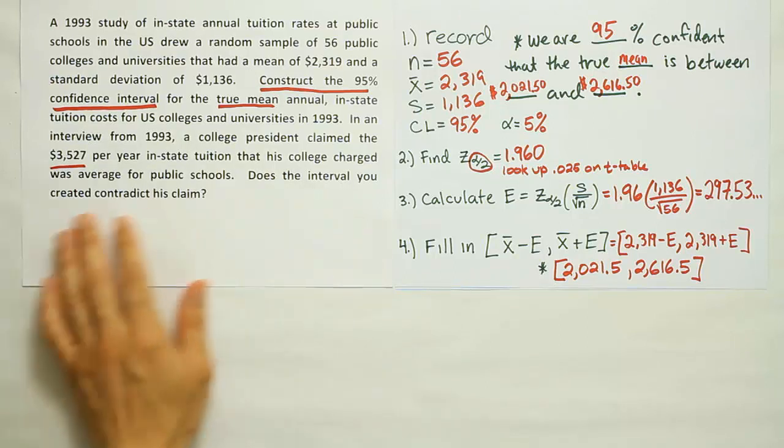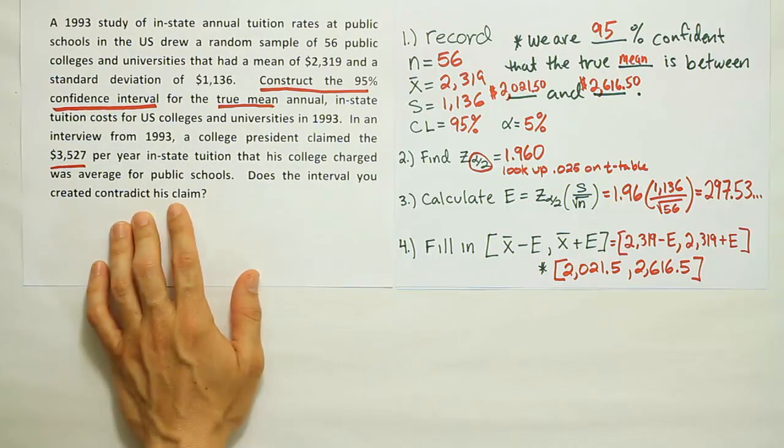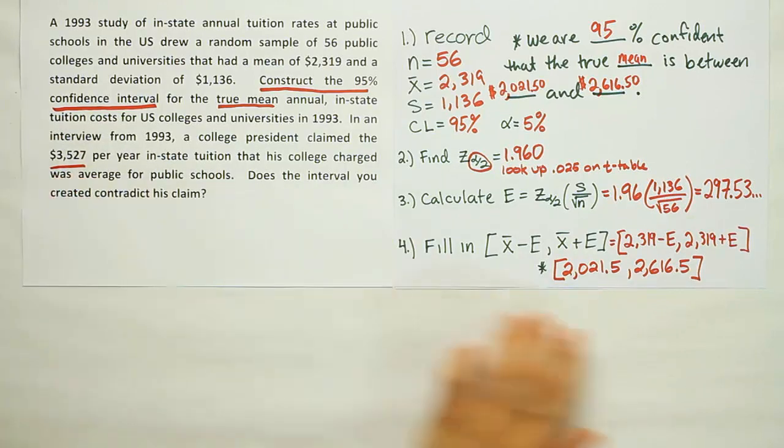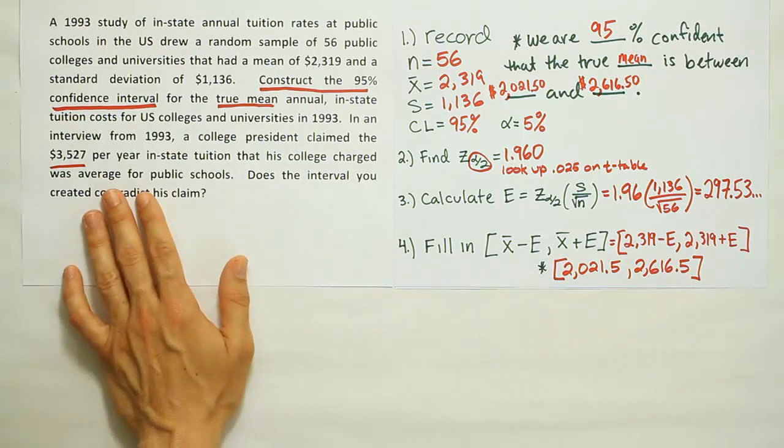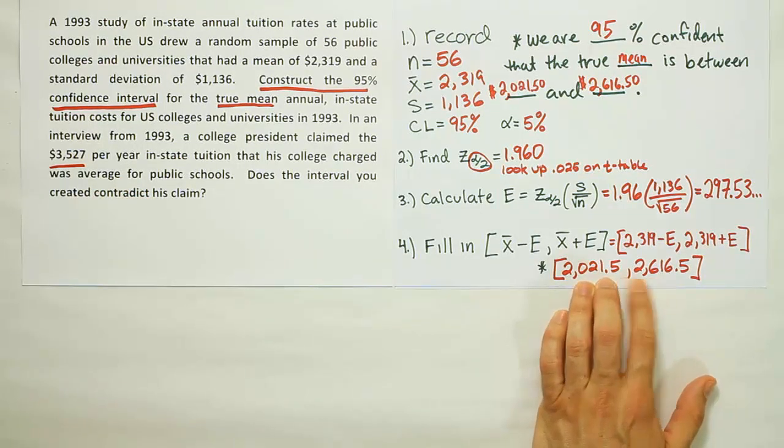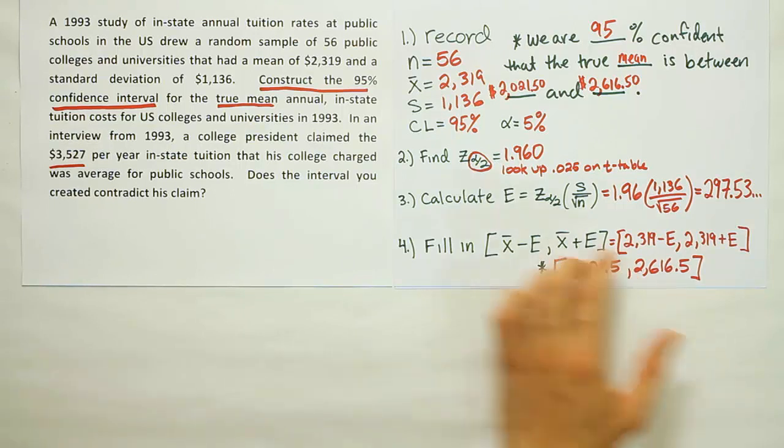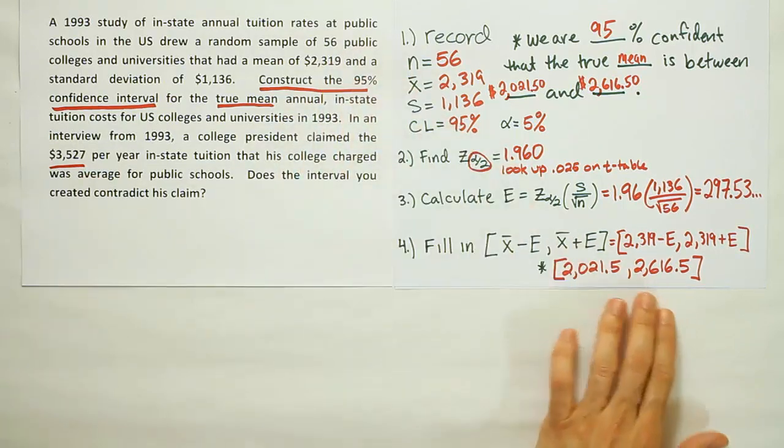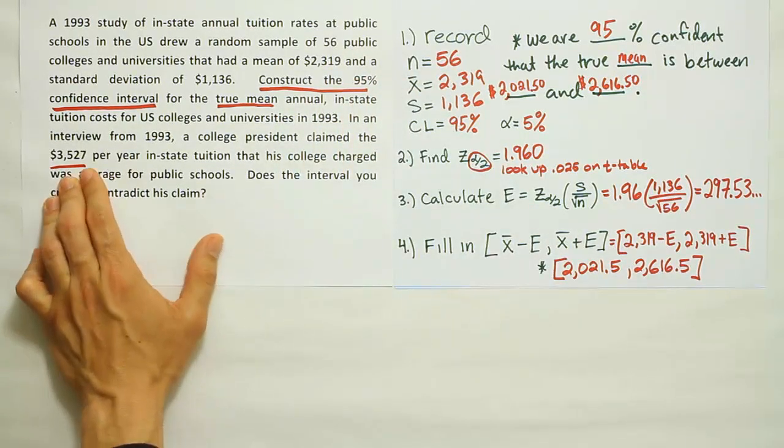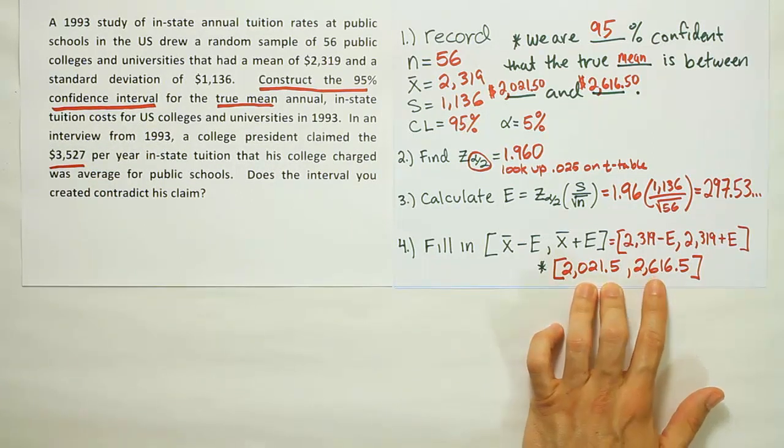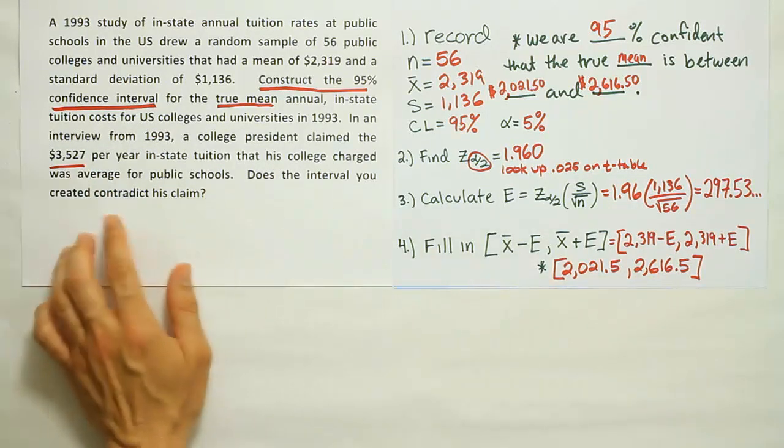It says, does the interval you created contradict his claim? It sure does. This number is outside of the interval, so it does not make for a good candidate for the population mean. Had he said that the number was, say, 2,400, well, 2,400 is within that interval. So if he had said that, we might say he's possibly right. But the fact that his number is outside of it, we can clearly say that our evidence, our sample data here, contradicts what he's saying. He's saying that's the average. We think the average is between these two numbers. So at this point, our interval does contradict his claim.